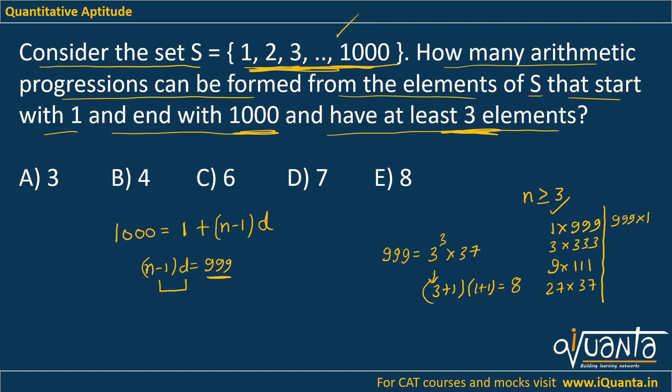If I write 999 times 1, that means (N minus 1) will be equal to 999 and D will be equal to 1. So that is possible, yes. Hence I can reverse these pairs: 333 times 3, then 111 times 9, and 37 times 27.